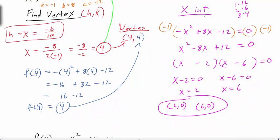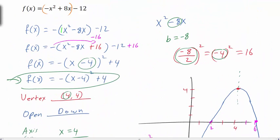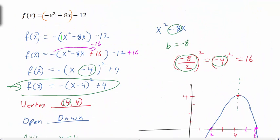So if you're not able to factor, you can always use the quadratic formula to find the x-intercepts. And if you don't prefer that technique, you can complete the square and rewrite the equation in standard form — either method works.